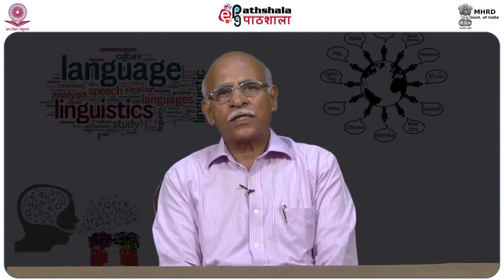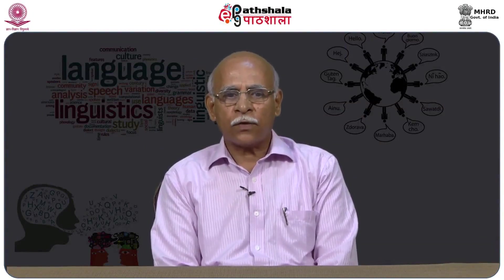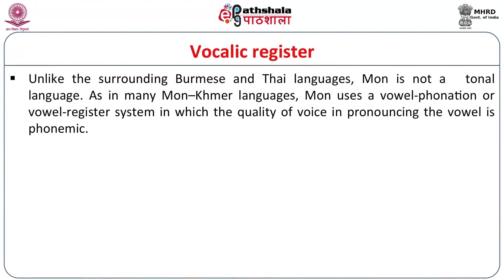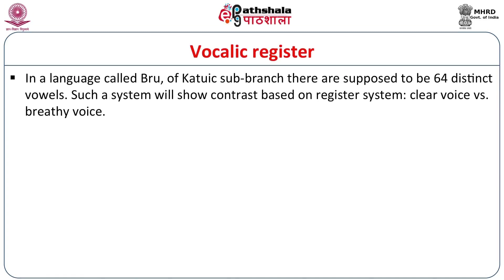Looking at vowels and other phenomena, Mon-Khmer languages — at least some of them — have what are known as vocalic registers. Interestingly, surrounding languages like Chinese and Thai have tones, but Mon, spoken in the same area, is not a tonal language. Mon is one of the important Mon-Khmer languages along with Khmer. As in many Mon-Khmer languages, Mon uses the vowel phonation or vowel register system in which the quality of voice in pronouncing the vowel is phonemic. There are two registers used in Mon: clear voice and creaky voice, also called breathy voice. In a language called Bru of the Katuic sub-branch, there are supposed to be 64 distinct vowels, as stated above — that is unusual.